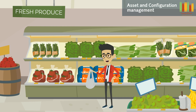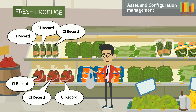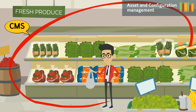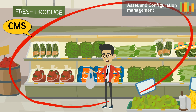Let us try to relate the items in a supermarket. Each veggie within a group is related to a configuration item record. Each veggie group can be related to a configuration management database. There will be multiple databases, one for each type of veggie. The entire veggie section can be related to CMS, the Configuration Management System.